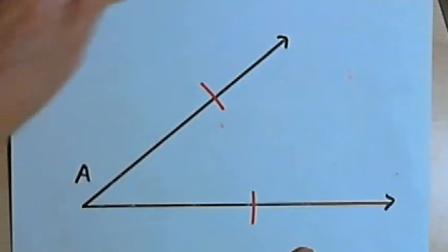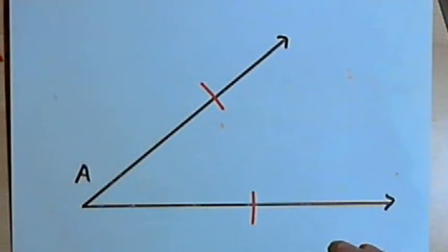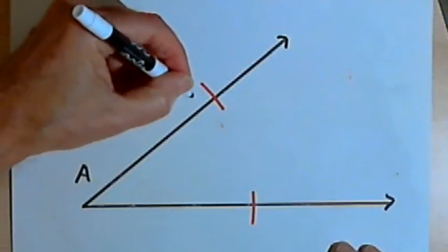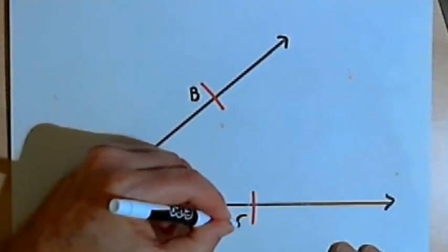So those two arcs... Actually, let's label the point where the arcs go through the rays. I'll label this one B and this one C.